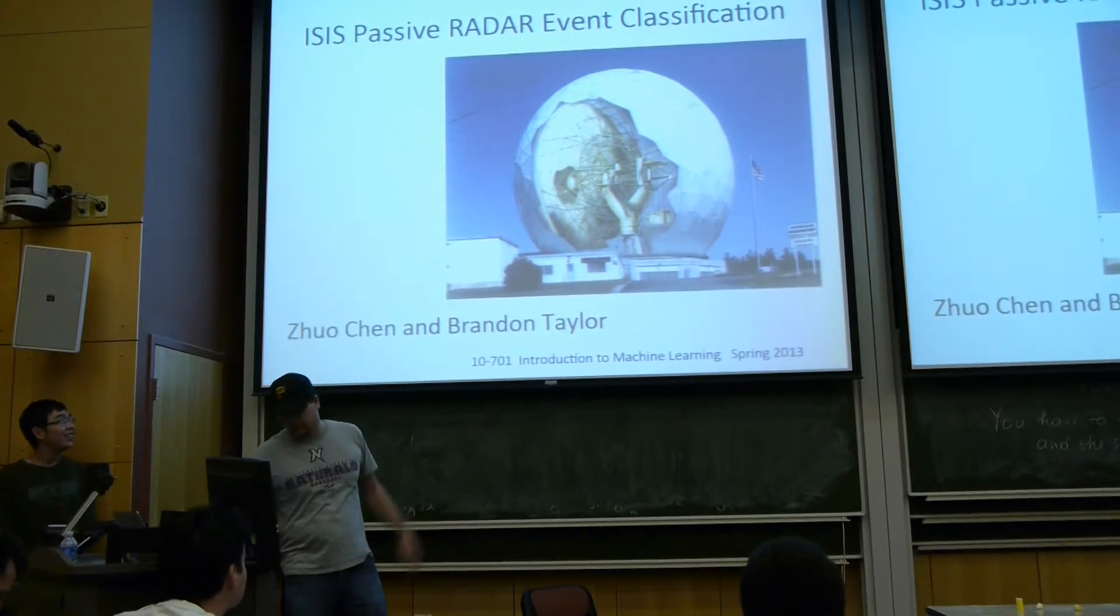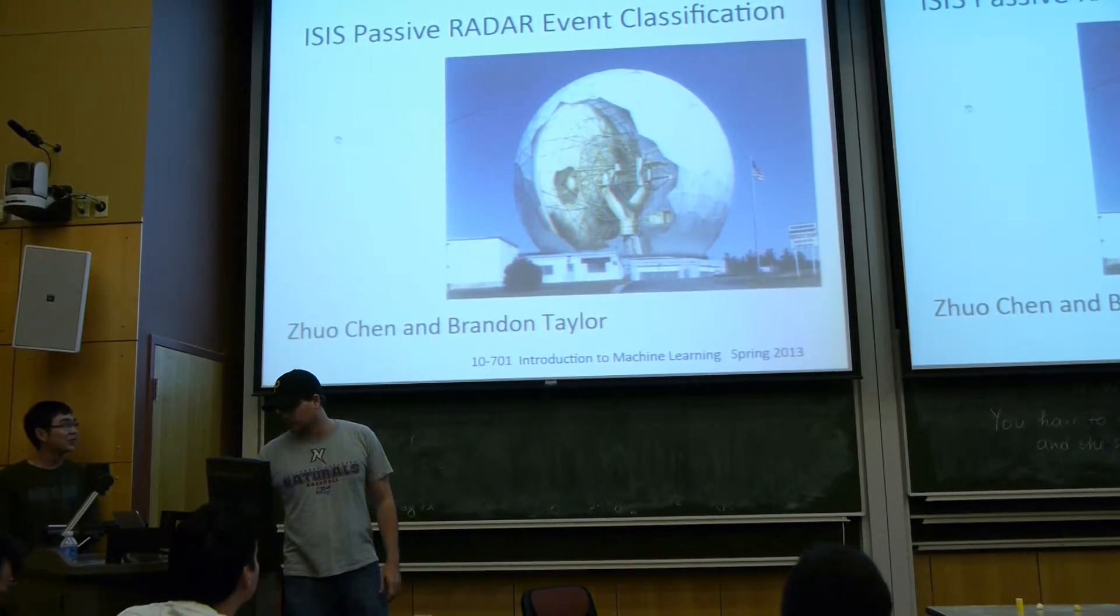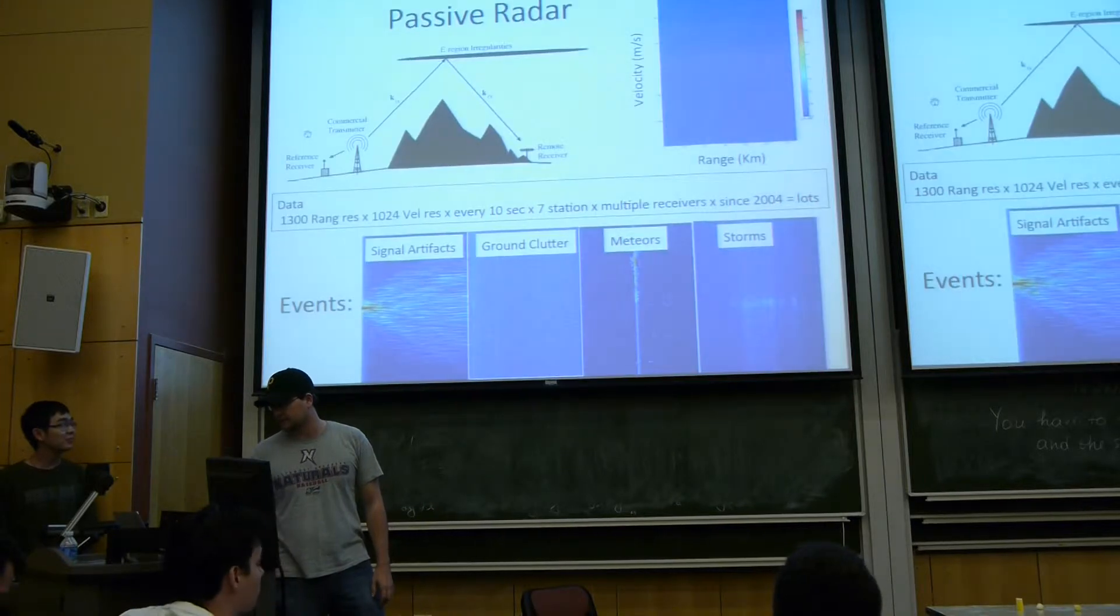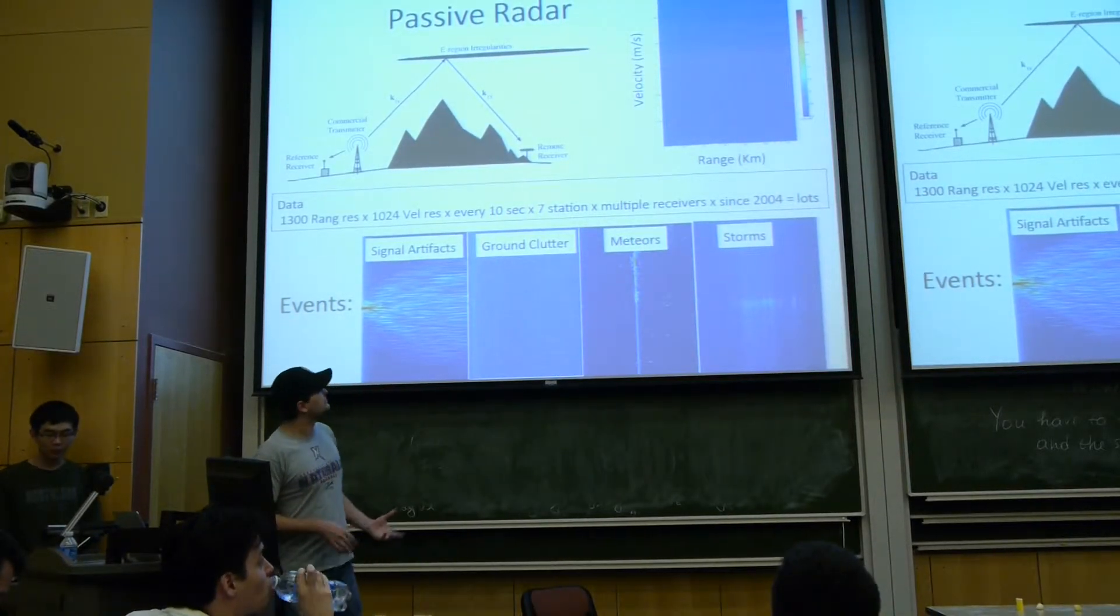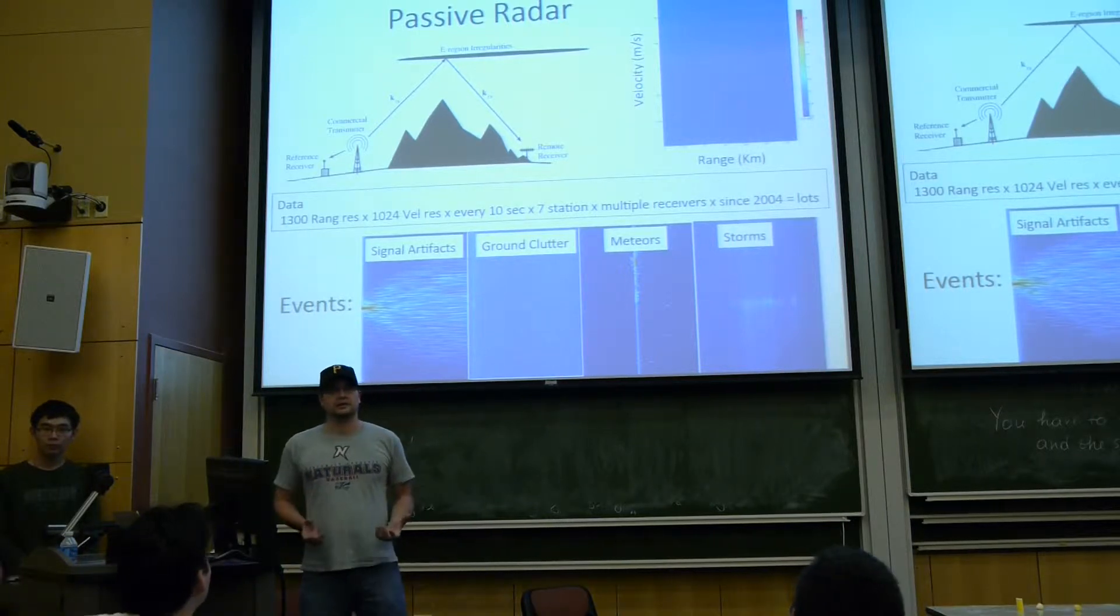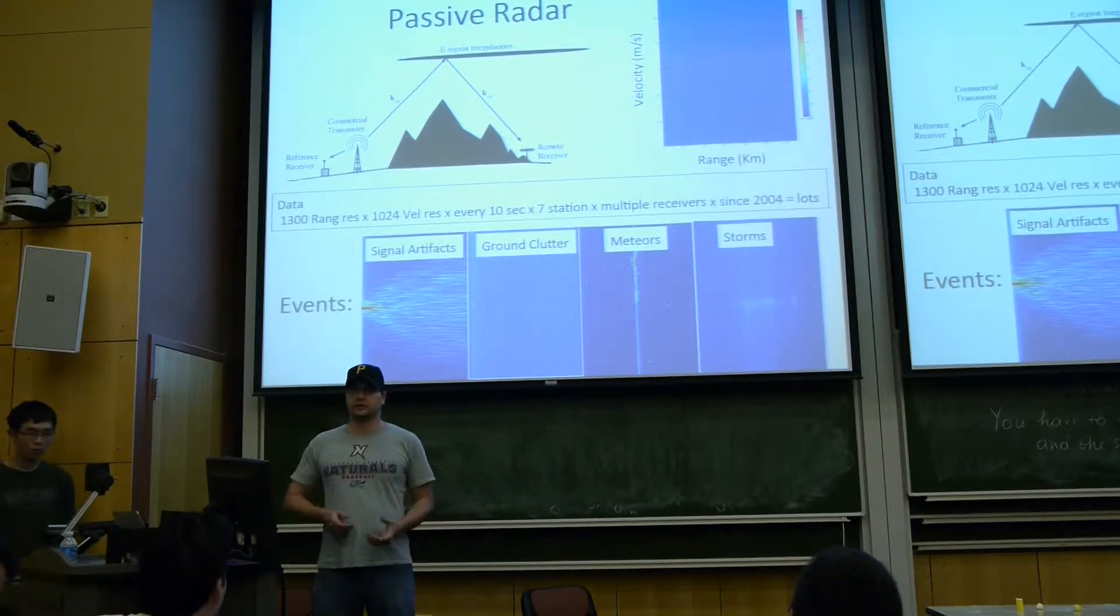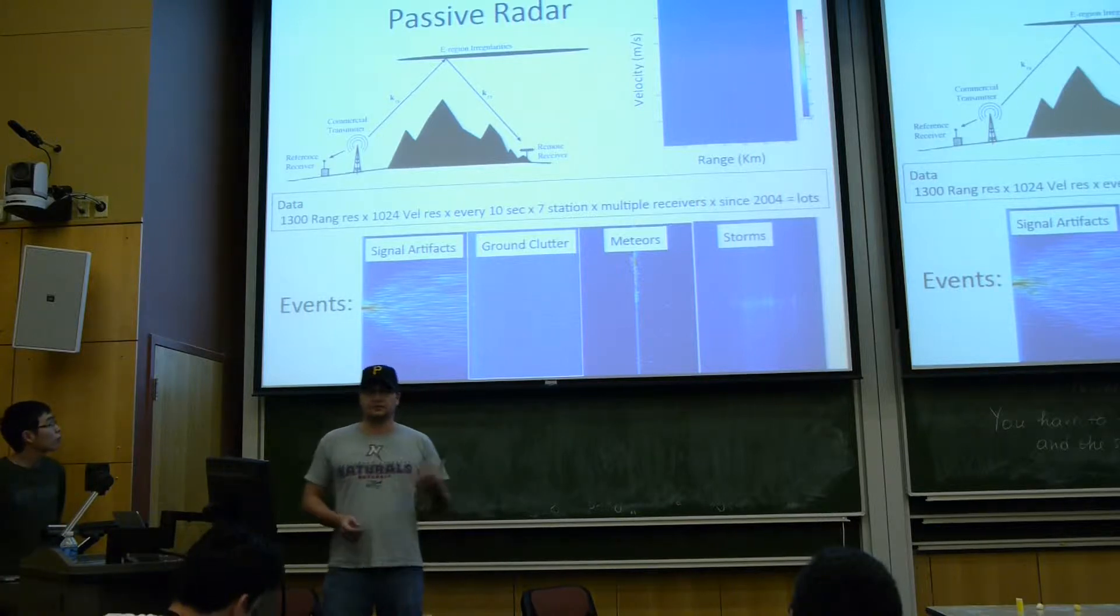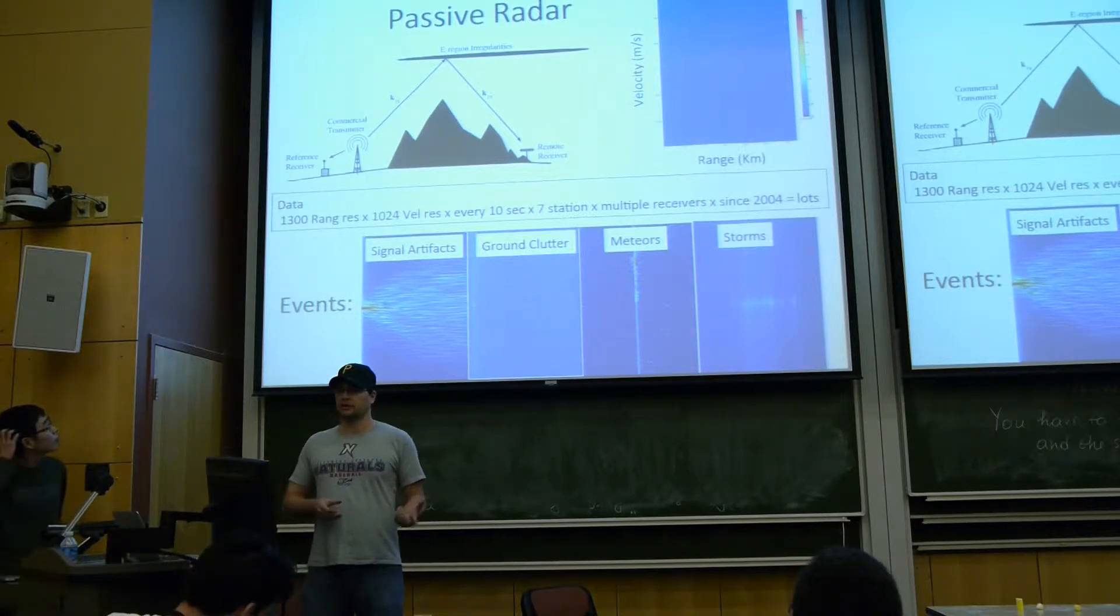That's a picture of the Millstone Hill radar dish where we were getting this data from. The basic idea is that passive radars are able to take advantage of existing broadcast signals, like commercial radio stations. They're able to receive this data and by correlating it against data received from the same radio station at another site, they can detect events going on in the atmosphere.